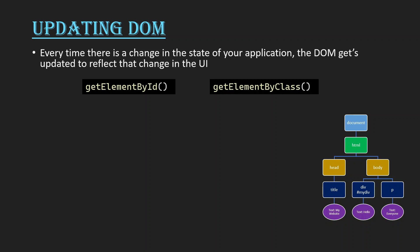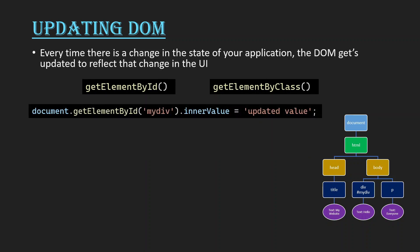Let's see how we update the DOM. Every time there is a change in the state of our application, the DOM gets updated to reflect the change in the UI. The most popular and easy way to update our DOM is the getElementById method and getElementsByClassName method. In this code example, we are taking one node or element and changing its text to an updated value — taking a div with the id 'myDiv' and changing its text from 'hello' to the updated value.